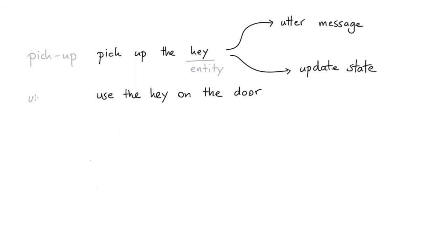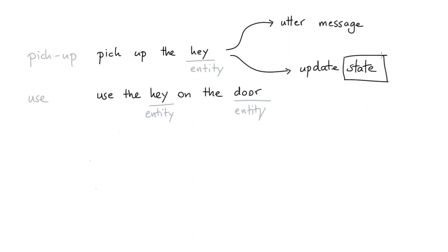So here we have the intent use. We've got an entity over here and here. But what's going to happen when you give this command depends on this state — whether or not you've picked up the key beforehand.